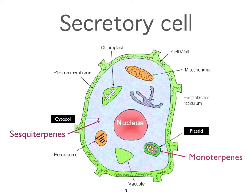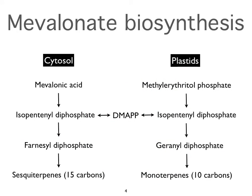In the secretory cell, you have sticky fluid called the cytosol, and you have little bodies called plastids. Sesquiterpene molecules are created in the cytosol, and monoterpene molecules are created in the plastids. In the cytosol, this is the kind of pathway of biosynthesis — biosynthesis meaning created in the plant or in nature, as opposed to synthetic, which is man-created. There are different biosynthetic pathways for sesquiterpenes and for monoterpenes.